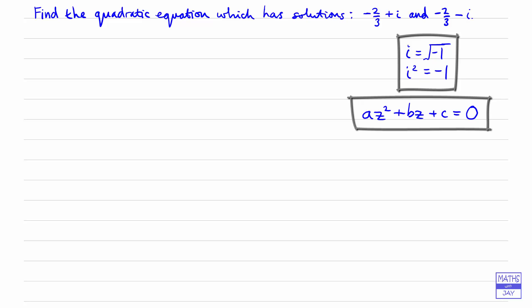Now we can see that the solutions that we've got are complex conjugates. In other words, the real parts are the same and the coefficient of the i is plus 1 in one of the roots and minus 1 in the other. So we know that a, b and c are going to be real numbers. So we're looking to find the quadratic equation az squared plus bz plus c is zero, so we know where we're headed.